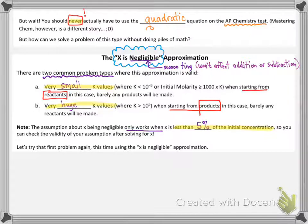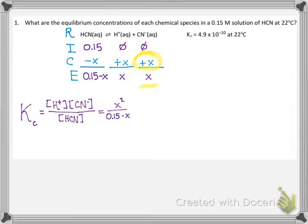Let's go ahead and look back at that example problem, but this time we're going to try the x is negligible approximation. Since it's the exact same problem, the beginning is still the same — you set up your RICE table, write out your equilibrium constant expression, and plug in in terms of x. But here we look at this and recognize that's a really tiny value for k. It's super small, this equilibrium system is going to be mostly reactants, and we started with only reactants — that makes this a great place to do the x is negligible approximation.